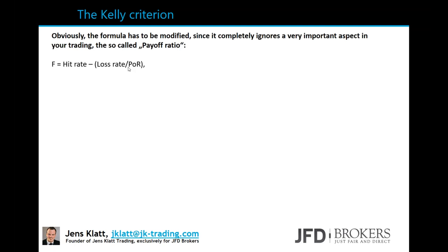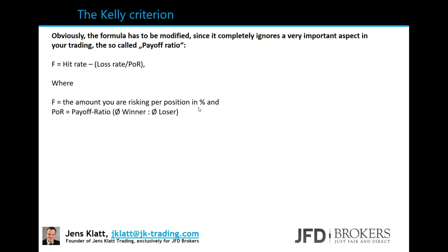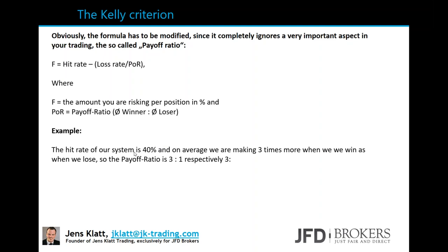The modified formula includes POR (payoff ratio): F = hit rate - (loss rate / payoff ratio), where F is the amount risked per position and POR is the ratio of average winner to average loser. For example, with a hit rate of 40% and on average making three times more when we win than when we lose - a payoff ratio of 3 to 1 - we get F = 0.4 - (0.6 / 3) = 0.4 - 0.2 = 20%.